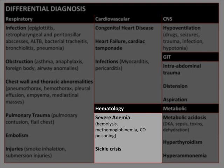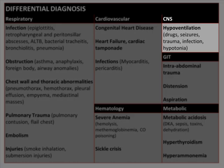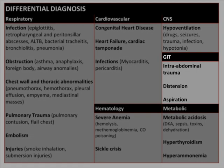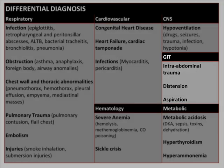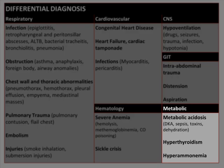Severe anemia and sickle cell crisis are some hematological causes of respiratory distress. Hypoventilation due to neurological insults, abdominal trauma, distension, and aspiration of gastric content can result in respiratory compromise. Metabolic causes such as acidosis, hyperthyroidism, and hyperammonemia can also result in respiratory distress.